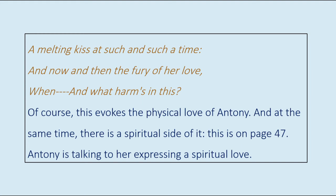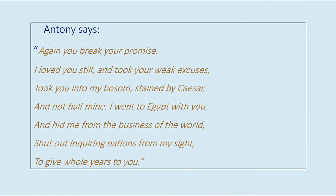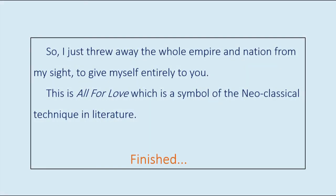On page 47, Antony is talking to her expressing a spiritual love. Antony says: 'Again you break your promise. I loved you still, and took your weak excuses, took you into my bosom, stained by Caesar, and not half mine. I went to Egypt with you, and hid me from the business of the world, shut out inquiring nations from my sight, to give whole years to you.' He threw away the whole empire and nation from his sight to give himself entirely to her. This is All for Love — a symbol of the neoclassical technique in literature.